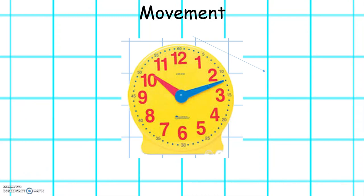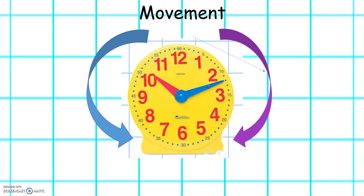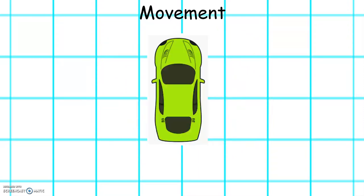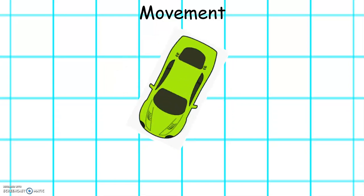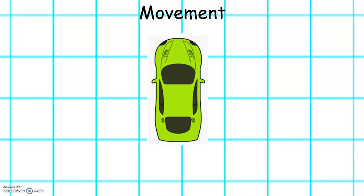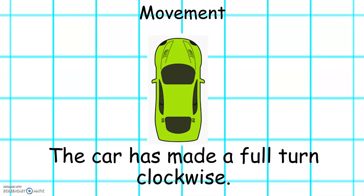We can also describe turns by using clockwise, the way that the hands on a clock move, or anti-clockwise, which is when something moves in the opposite direction to the hands on a clock. Let's see how this car moves — clockwise or anti-clockwise? Well done. This car has made a full turn clockwise.